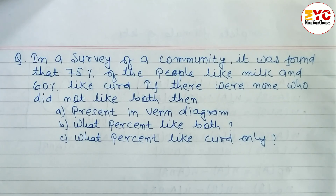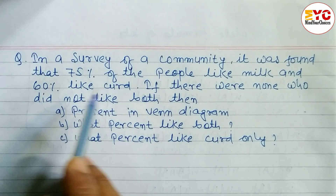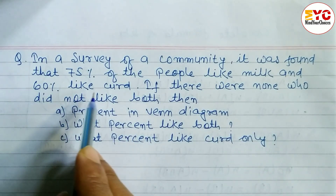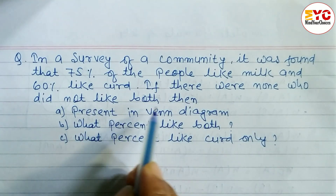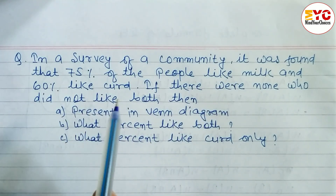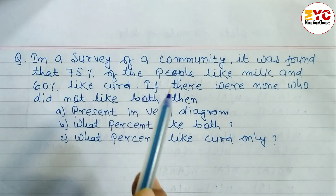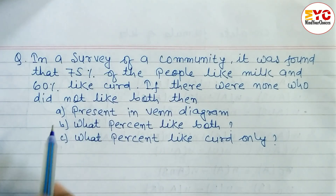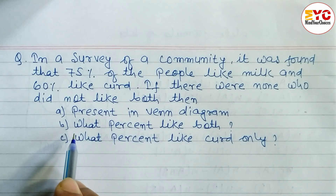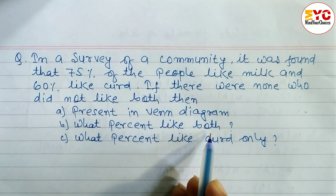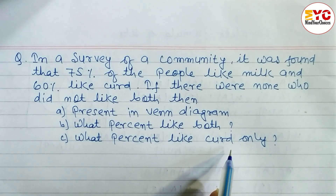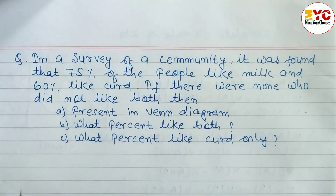In a survey of a community, it was found that 75% of people like milk and 60% like curd. There is no one who doesn't like both, meaning each and every person in the community likes either milk or curd. We need to: (1) represent this in a Venn diagram, (2) find the percent of people who like both, and (3) find the percent who like curd only.